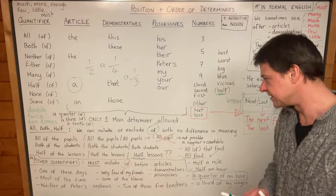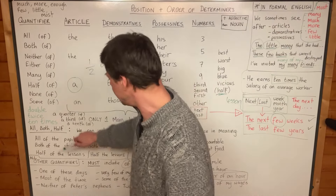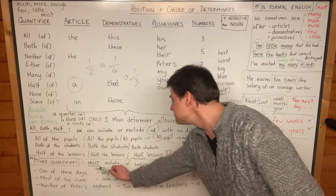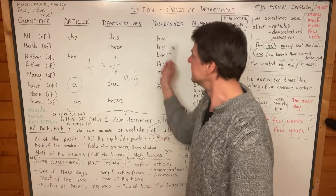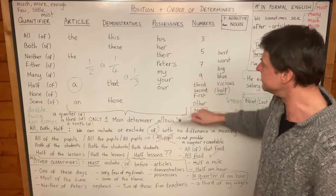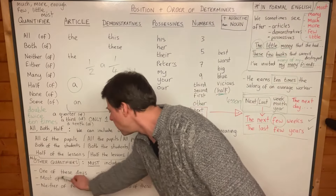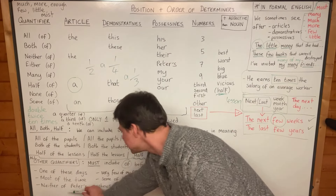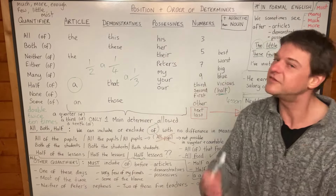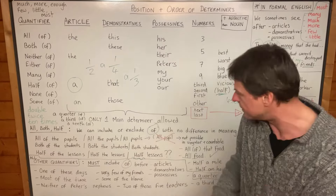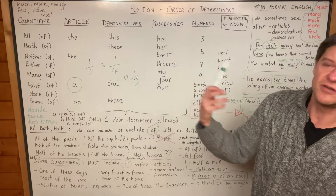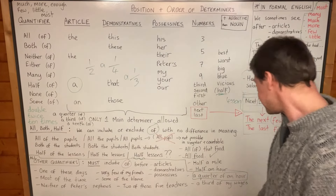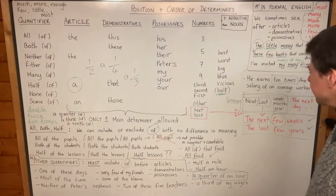All other quantifiers — and I mean not 'all,' 'not,' 'both,' or 'half' — but all the other ones here with 'of' after them: you must include 'of' before the main determiners, before articles, before demonstratives, and before possessives. Here are some examples: 'one of these days' — you can't just say 'one these days.' Also: 'most of the time,' 'neither of Peter's nephews,' 'very few of my friends,' 'some of the blame,' 'two of those five teachers.' So you must always use 'of' in these cases.